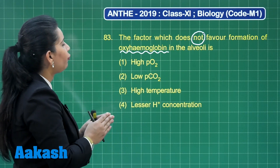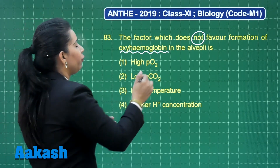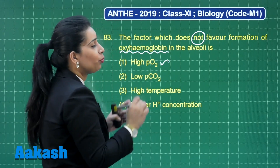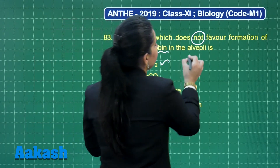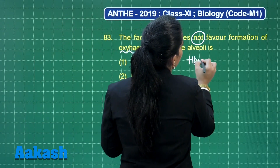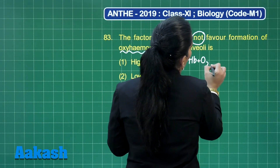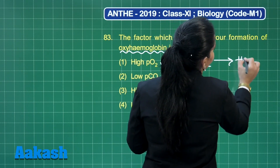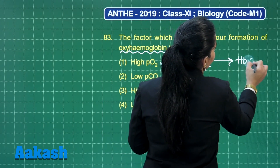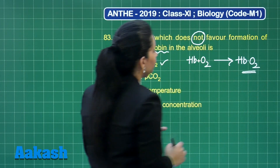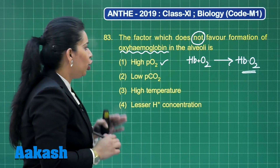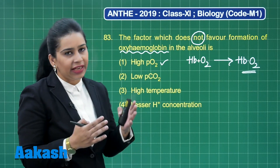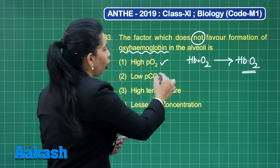We have 4 options. High partial pressure of oxygen — yes, this is going to promote the binding of hemoglobin with oxygen. Low partial pressure of carbon dioxide — yes, this is also true.